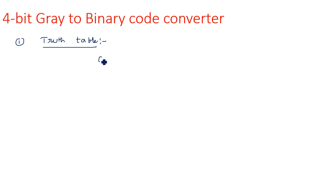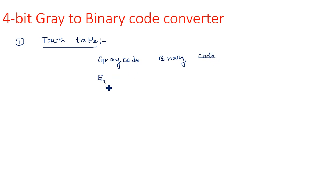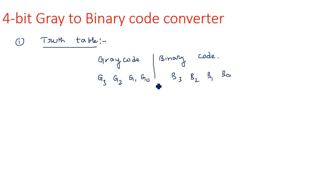On the left-hand side we are having gray code and on the right-hand side we are having binary code — that means input code and output code. Gray code we are representing as G3, G2, G1, G0, and binary code we are taking as B3, B2, B1, B0. So first, take the input and output values.